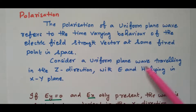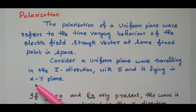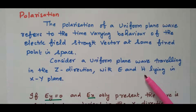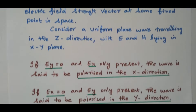Consider a uniform plane wave traveling in the z-direction. E and H are lying in the xy plane — the electric field and magnetic field are lying in the xy plane. In this xyz coordinate system, the electric field intensity is available in the x-plane, magnetic field intensity in the y-plane, and the plane wave is traveling in the z-direction. Based on that we will consider the different types of polarization.